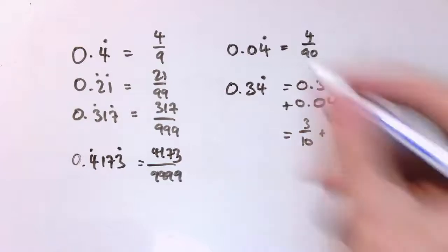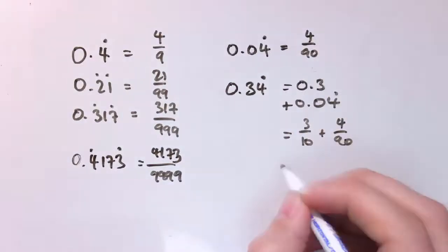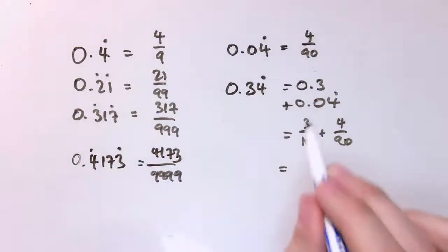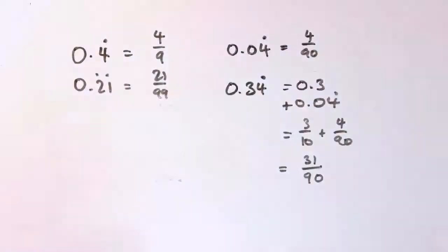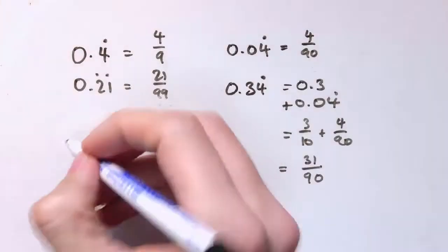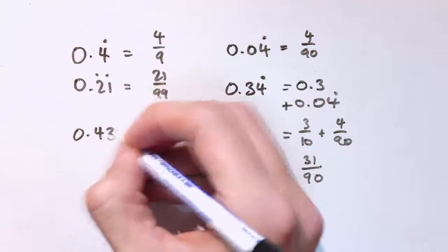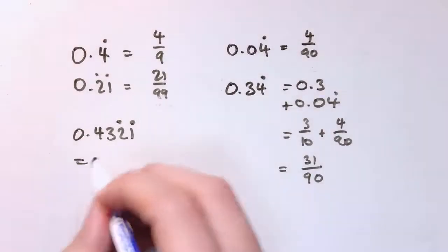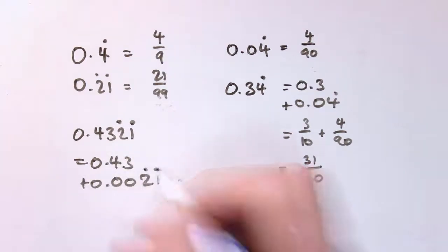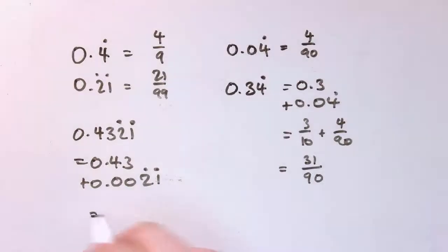This is a bit bigger because it's got all fours, but this has got fours with some zeros. Now if I say, well, what about 0.34 recurring? 0.34 recurring is 0.3 plus 0.04 recurring, so that's 3 tenths plus 4 ninetieths. That would be 27 ninetieths plus 4 ninetieths, that would be 31 ninetieths.